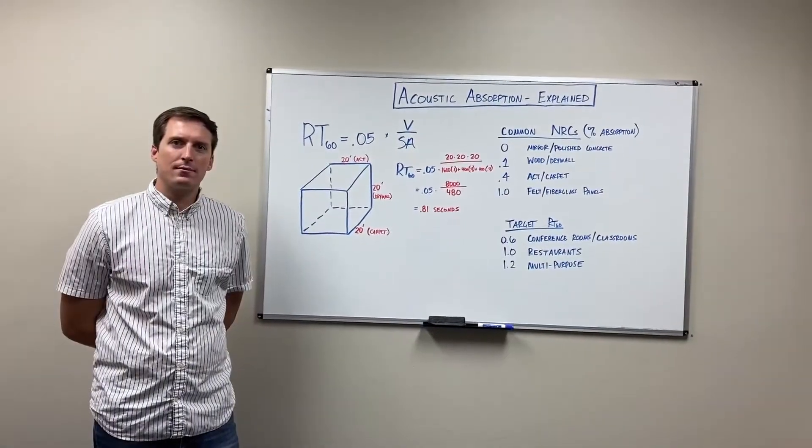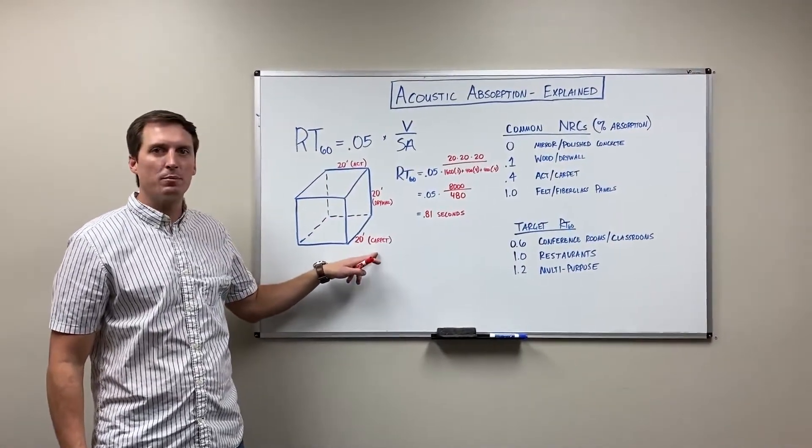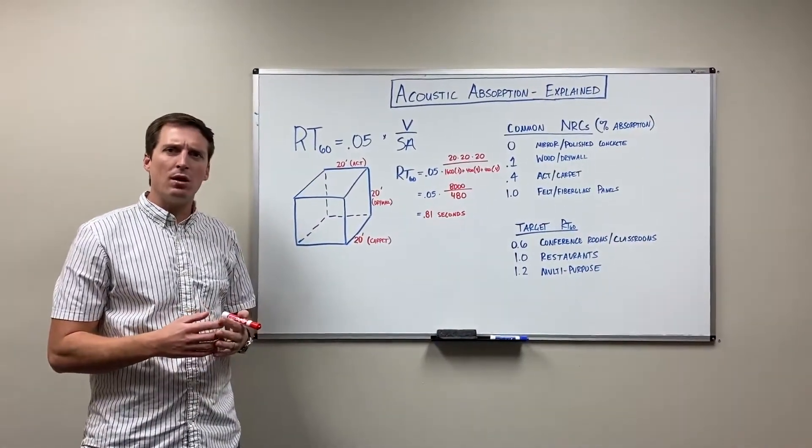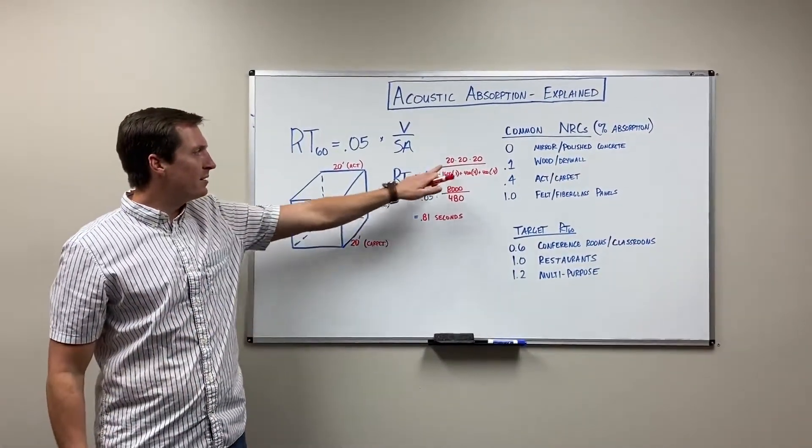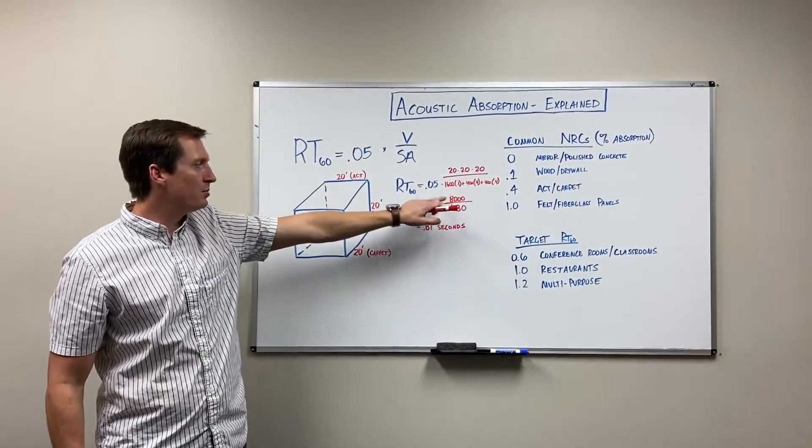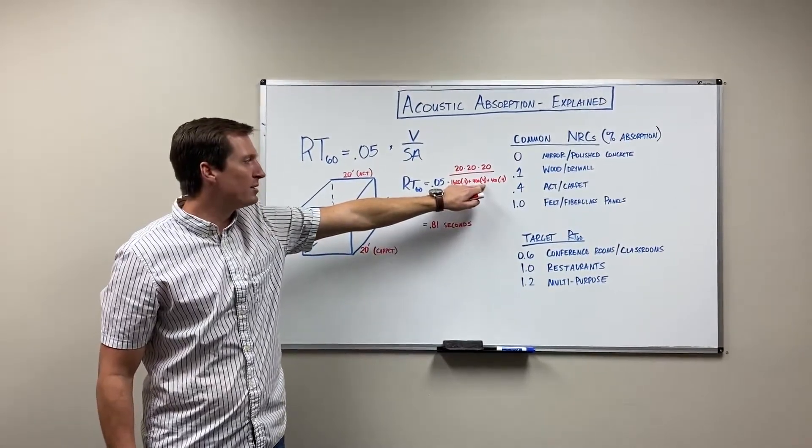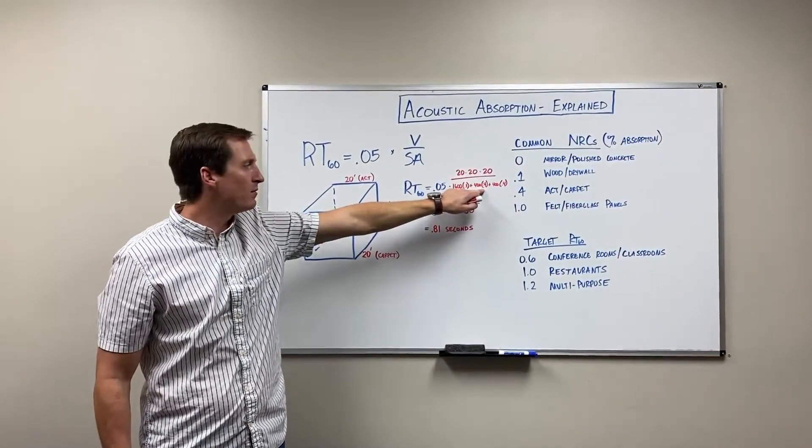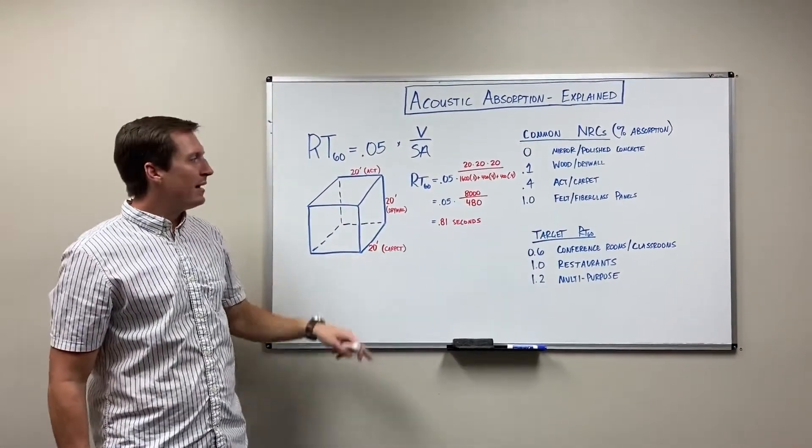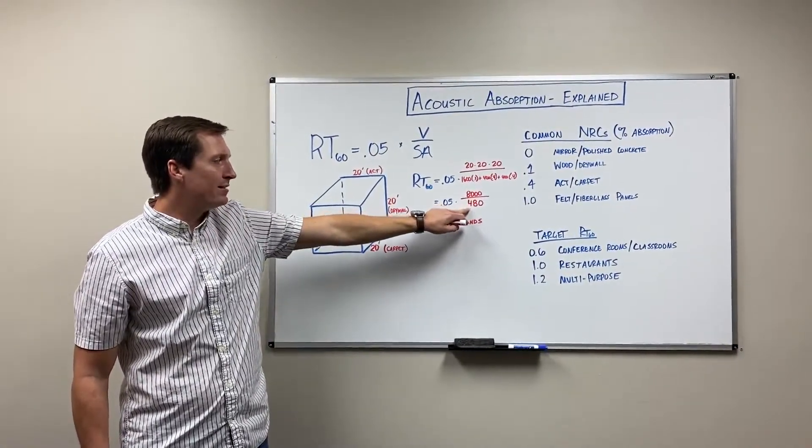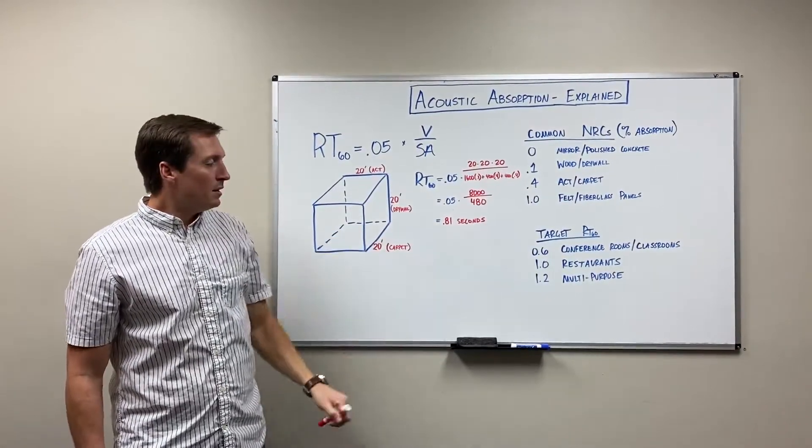All right then, so the last change we're making is to change the actual finishes in the space to carpet and ACT. These are more traditional absorptive surfaces that can be used in most rooms. And you can see we stick with 20 by 20 by 20, 20 cubed in the numerator, but look how much the denominator changes. We have a 40% absorptive rating or a 0.4 NRC for the ACT, we have a 0.4 NRC for the carpet. And what happens is 8,000 divided by 480 times the coefficient drops to 0.81 seconds.